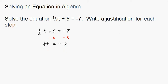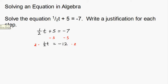Instead of dividing by one half, we're actually going to multiply by 2 on both sides. Multiplying by 2 on the left cancels everything and all I have left is t. And whatever I do to one side, I must do to the other. So multiplying by 2 on the right side also gives t equals negative 24.